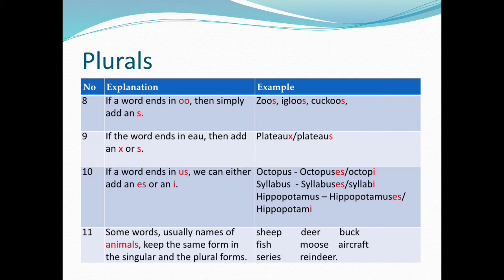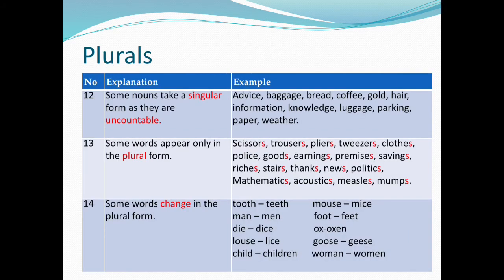11. Some words, usually names of animals, keep the same form in both the singular and the plural — sheep, deer, buck, fish, moose, aircraft, series, reindeer.